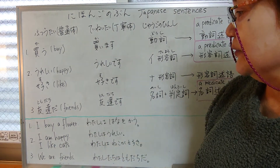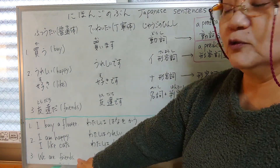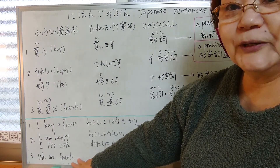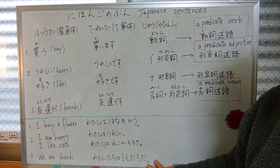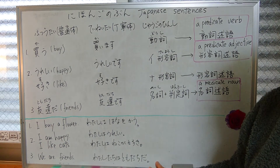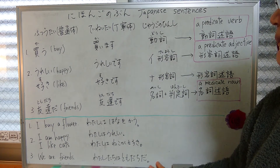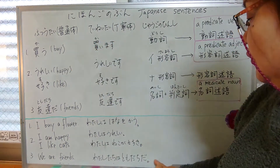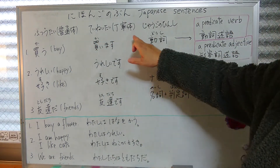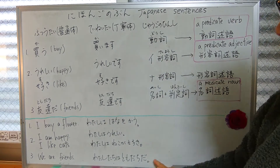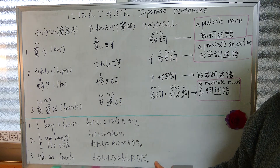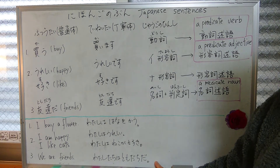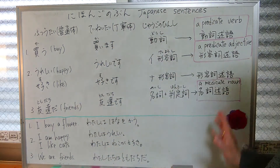Number three, the last one: 'We are friends.' Normal form: watashi-tachi wa tomodachi da. Polite form: watashi-tachi wa tomodachi desu. These are all Japanese sentences!